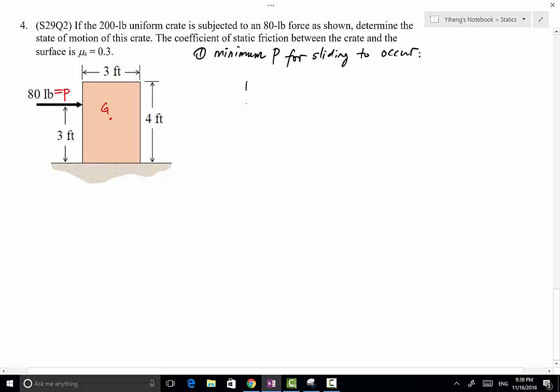So in that case, this is the free body diagram. The weight force is right here in the center. That's your 200 pound weight force. This is my P1. Right now I'm treating it as if it's an unknown. My normal force doesn't have a specified location, and this is the frictional force.